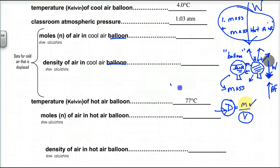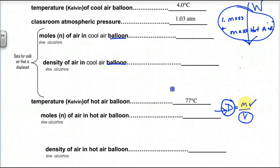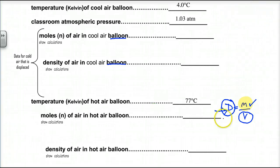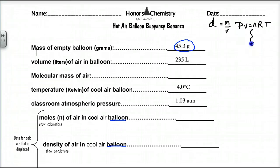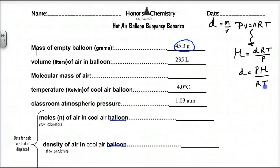The key equation is density equals PM over RT, derived from PV = nRT. We also have molecular mass M equals dRT over P. So we're going to get the density of both hot and cold air, which gives us the mass of each. The buoyant force comes from the cold air mass; the weight, in part, is due to the hot air. But we need the molecular mass of air — the mass per one mole. We know temperature and pressure, so we need to calculate molecular mass.